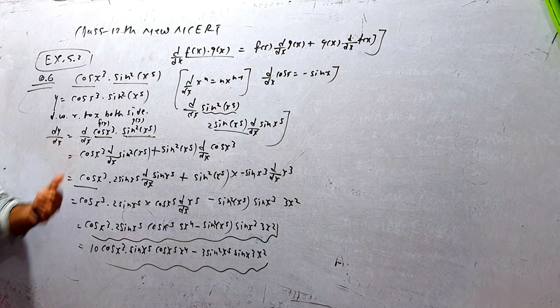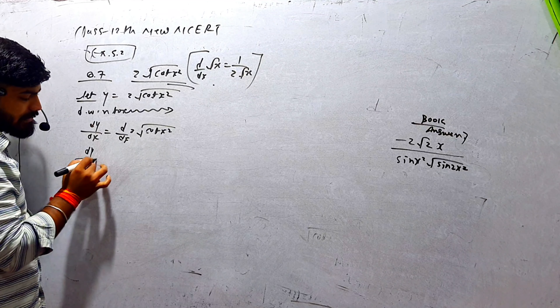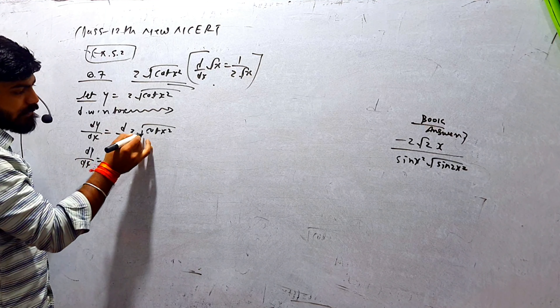अगला question: let y = 2√(cot x²)। Differentiation with respect to x, दोनों पक्षों का। dy/dx = d/dx of 2√(cot x²)। Root में कुछ और होगा तो उसको फिर differentiate करना पड़ेगा — chain rule लगेगा। तो dy/dx = 2 × 1/(2√(cot x²)) into d/dx of cot(x²)। 2 और 2 cancel।